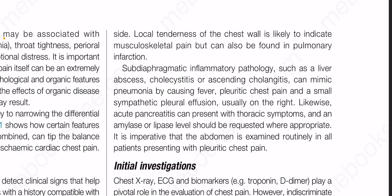Subdiaphragmatic inflammatory pathologies such as liver abscess, cholecystitis or ascending cholangitis can mimic pneumonia by causing fever, pleuritic chest pain and a sympathetic pleural effusion, usually on the right. Likewise, acute pancreatitis can present with thoracic symptoms and an amylase or lipase level should be requested where appropriate. It is imperative that the abdomen is examined routinely in all patients presenting with pleuritic chest pain.